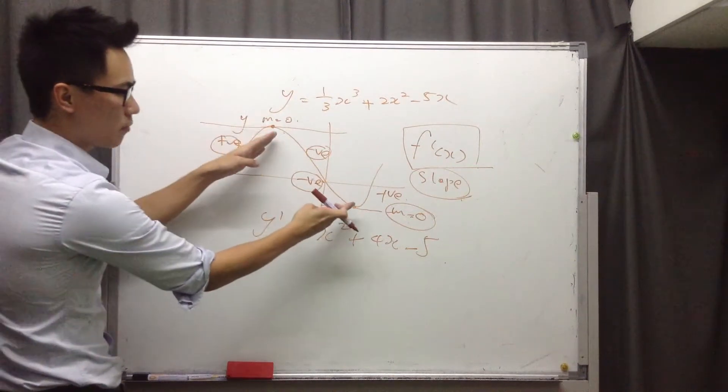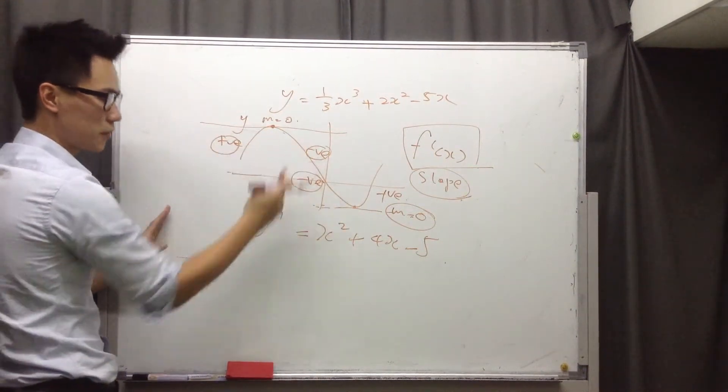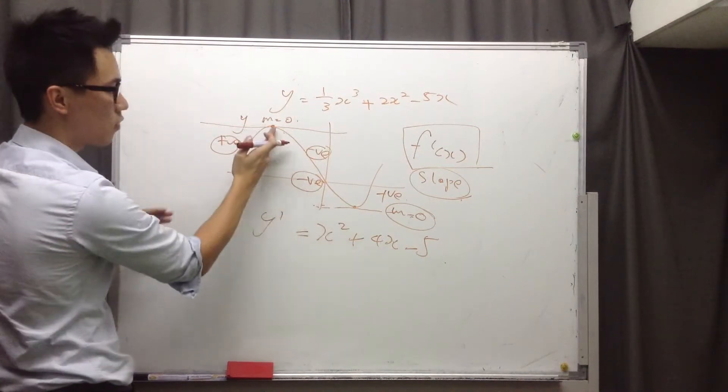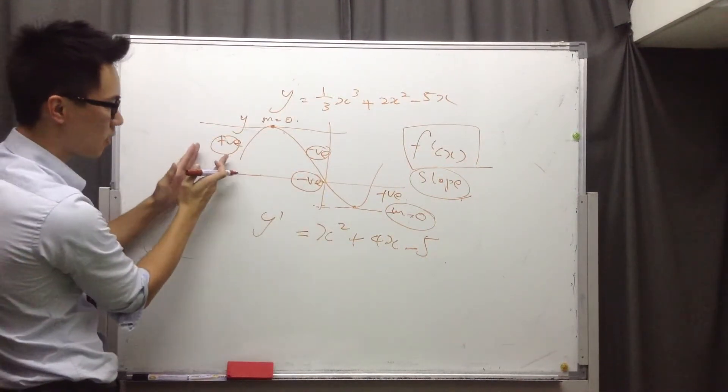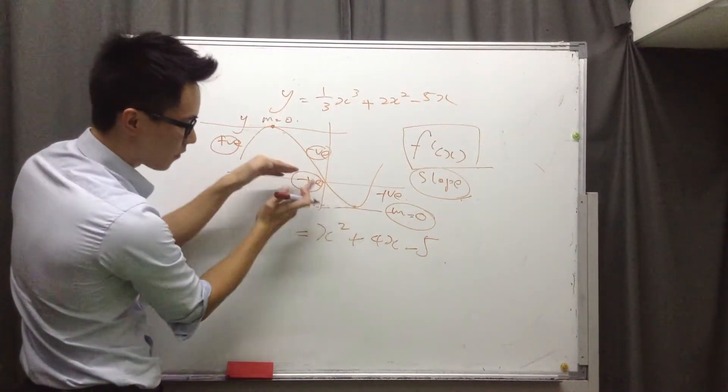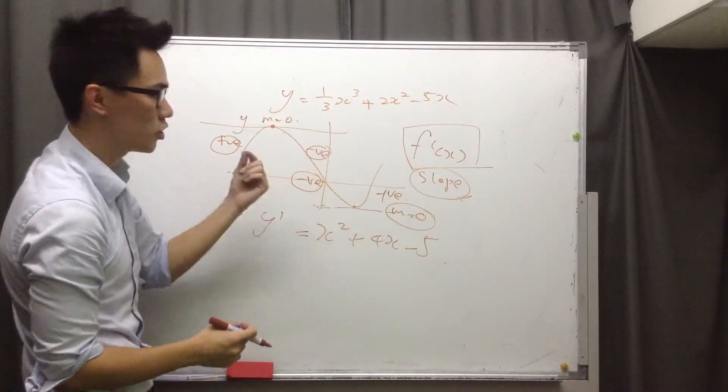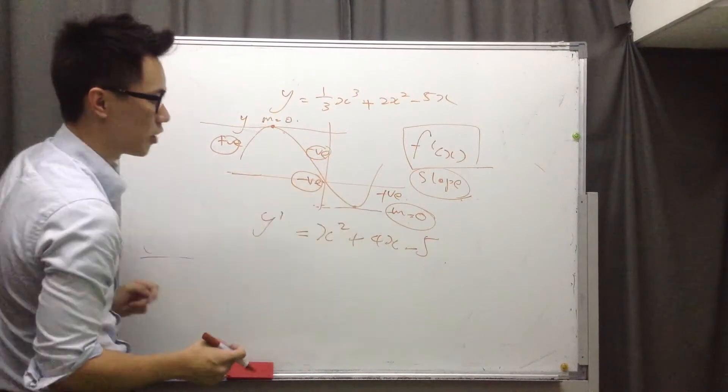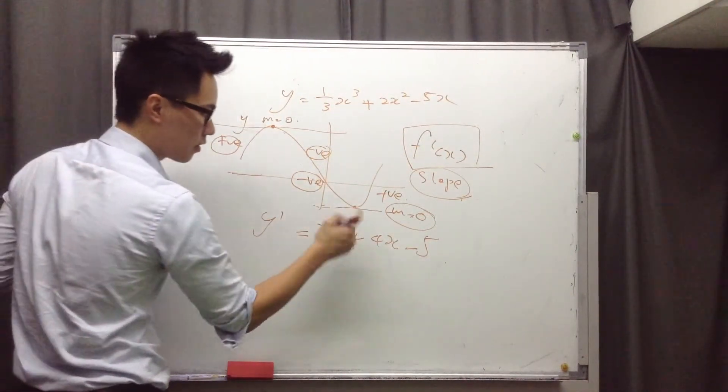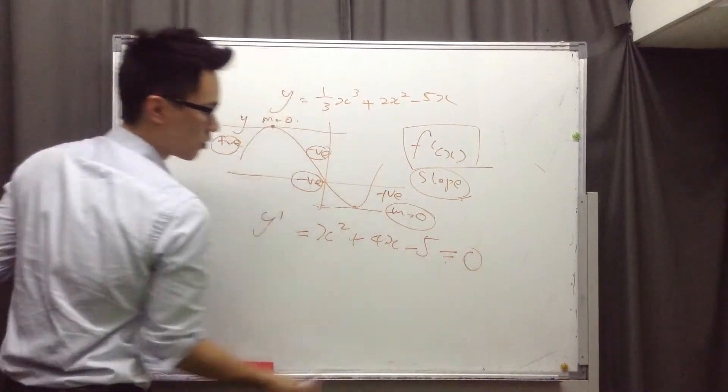So to find the turning points, turning point means there's a change in slope before and after the point. We can see here, from positive to negative, this is what we call turning point. And this, from negative to positive, changing the slope, turning point as well. That's why the slope here, we need to be equal to zero.